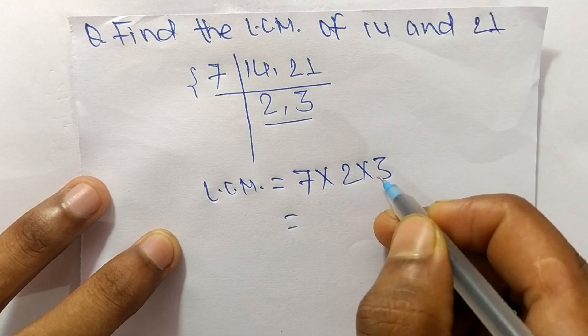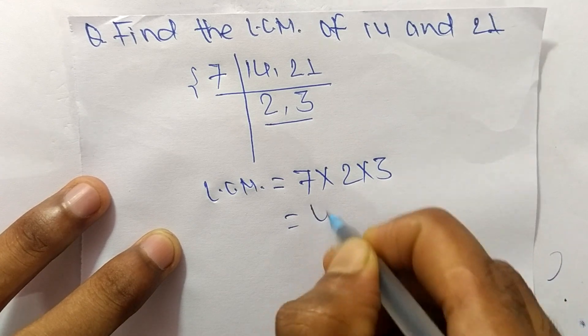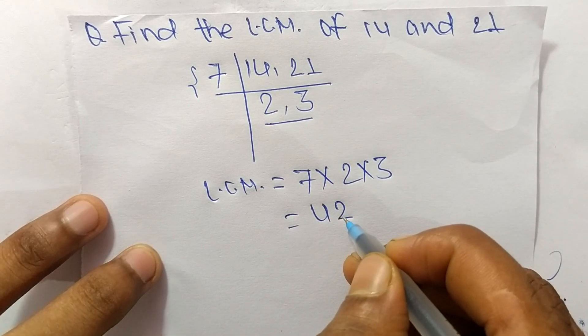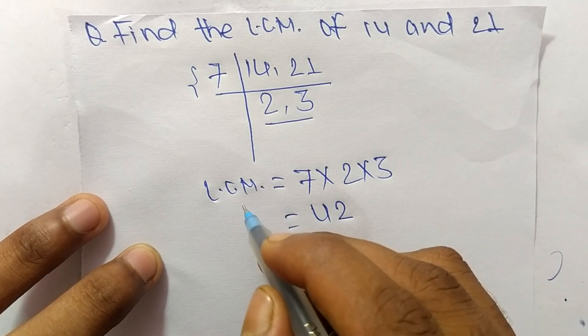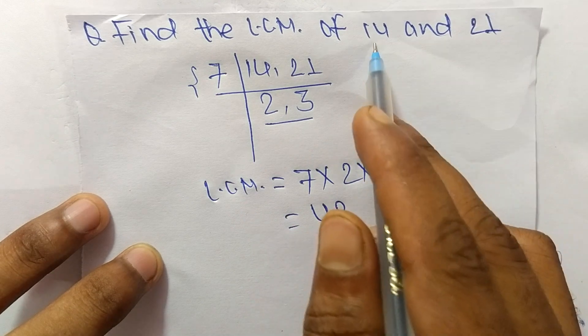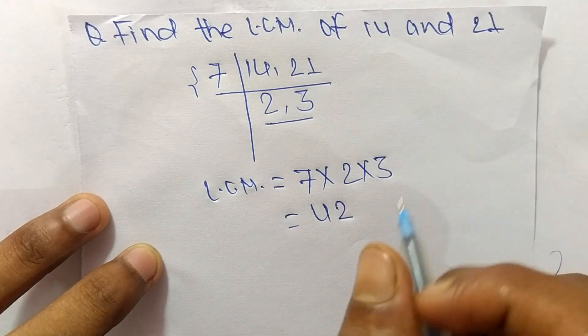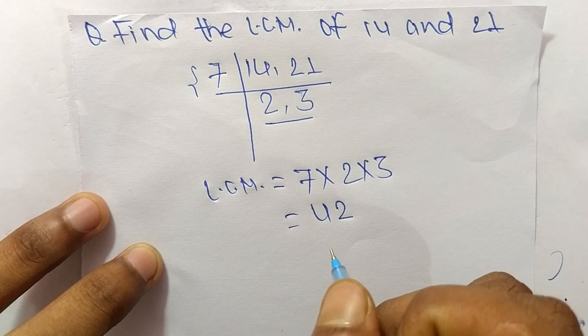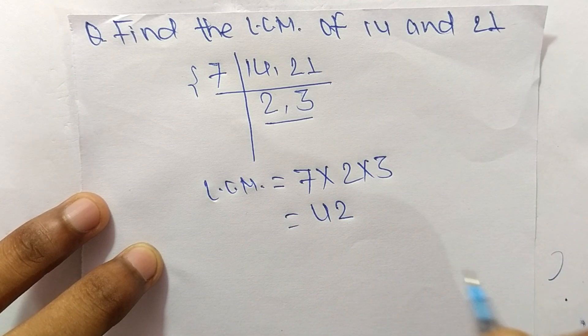14 times 3 equals 42, so 42 is the LCM of 14 and 21. That's all for today — thanks for watching.